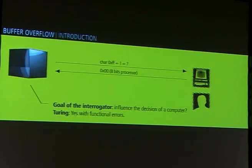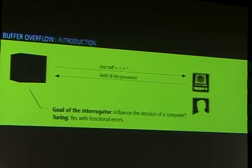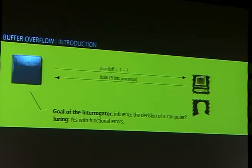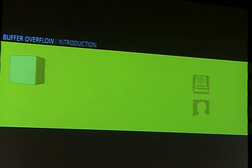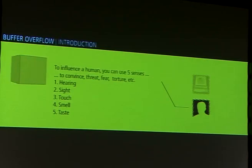The question is: is it possible for the interrogator to use something to change the behavior, to influence the decision of a computer? Turing said yes, with functional errors. For example, if we have a small 8-bit processor that just recognizes bytes, you can ask it to add one to 255, and it can answer null — so you can have sort of proof that you are speaking to a computer.